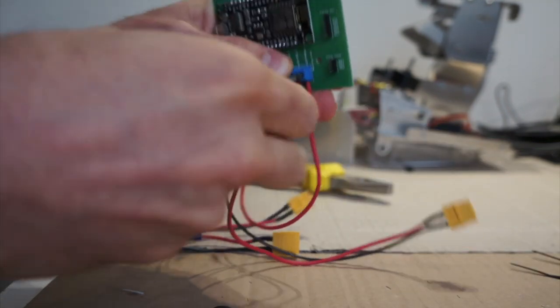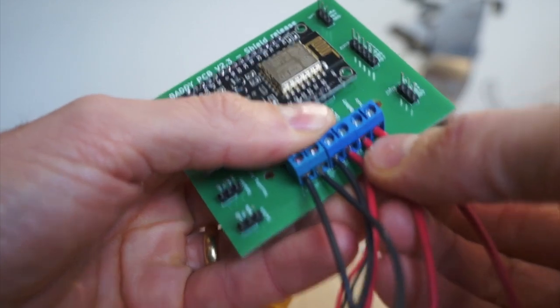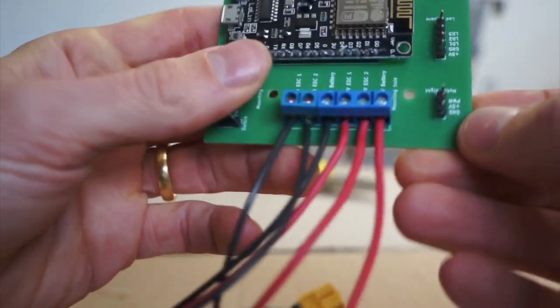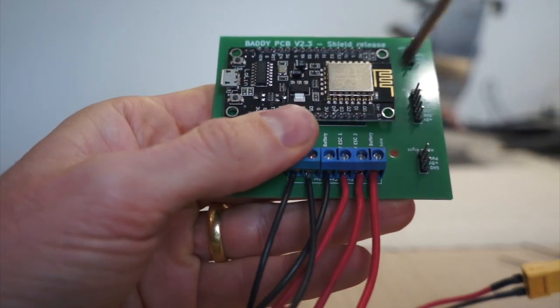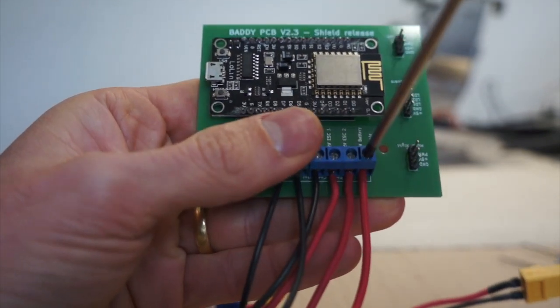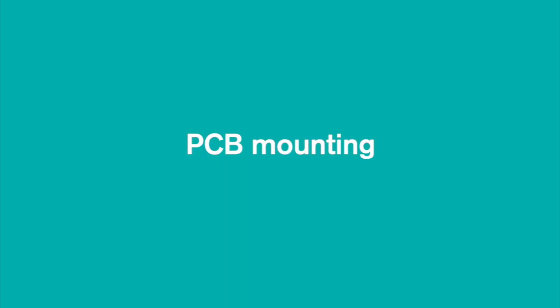So please double check, make sure the wires are tightened enough by the screws. Once you're happy with the wiring, you can go to the next step by mounting your PCB on your frame.